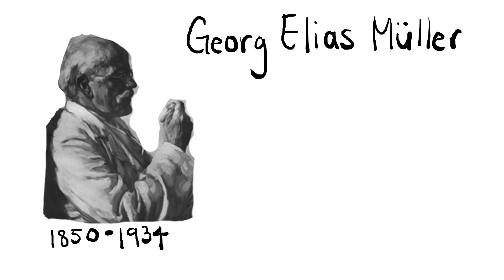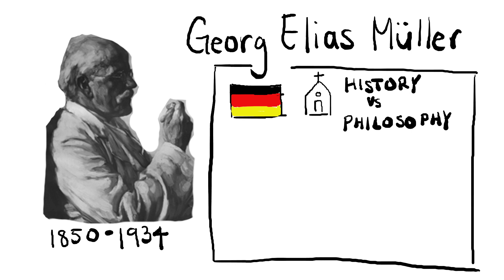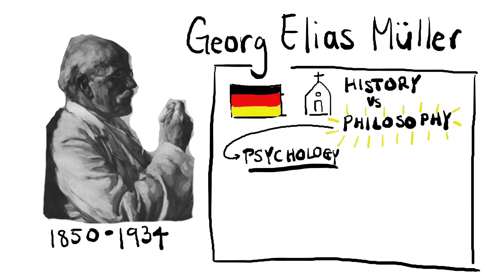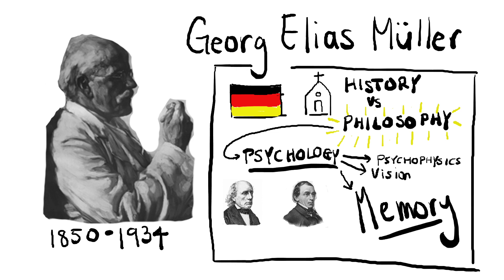This is where Georg Elias Müller and Friedrich Schumann come in. Müller was born in Germany, and like many other psychologists, his father was a theologian. He attended Leipzig University, where he studied history and philosophy, ultimately choosing philosophy, which led to psychology. He studied with Gustav Theodor Fechner and Hermann Lotz, who eventually pushed him toward psychology. He mainly studied psychophysics, vision, and memory.